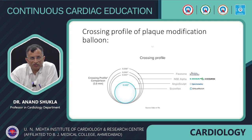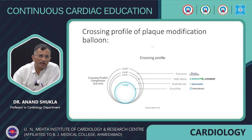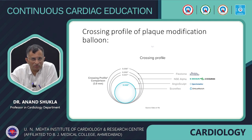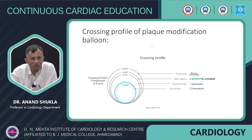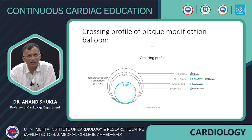Looking at crossing profiles, the lowest is the Scoreflex — only a wire is used, giving a crossing profile of 1.002 mm. The highest crossing profile is the cutting balloon (Flextome).